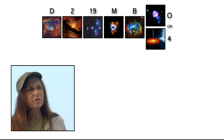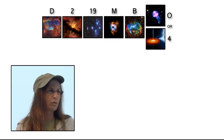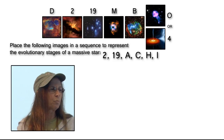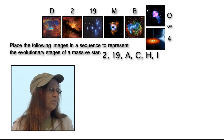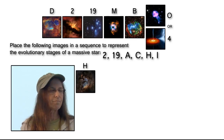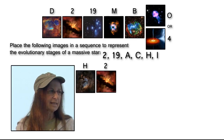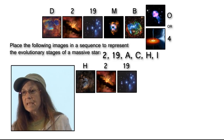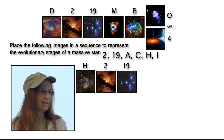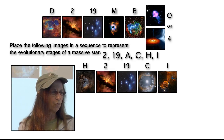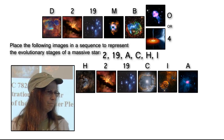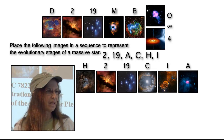There are many different sequences for the same thing. Now we're going to put together another massive star sequence, this time using 2, 19, A, C, H, and I. We have H, which is a star formation complex; again we have 2 and the massive stars in the Pleiades; then we have AG Car; IC 443; and a pulsar.